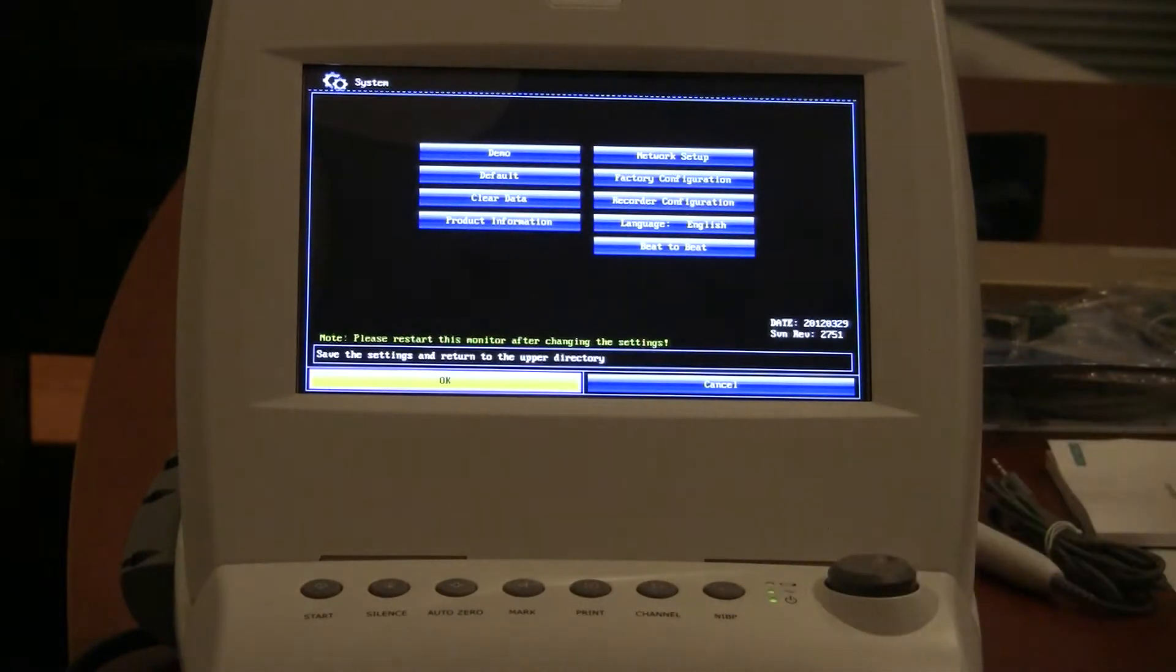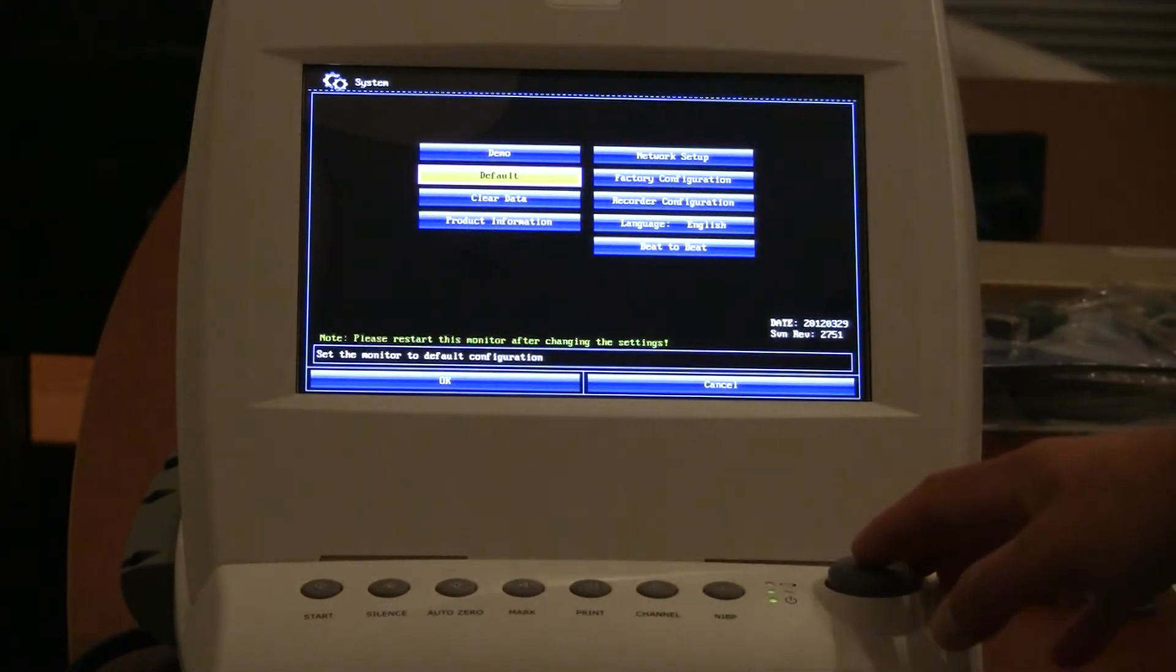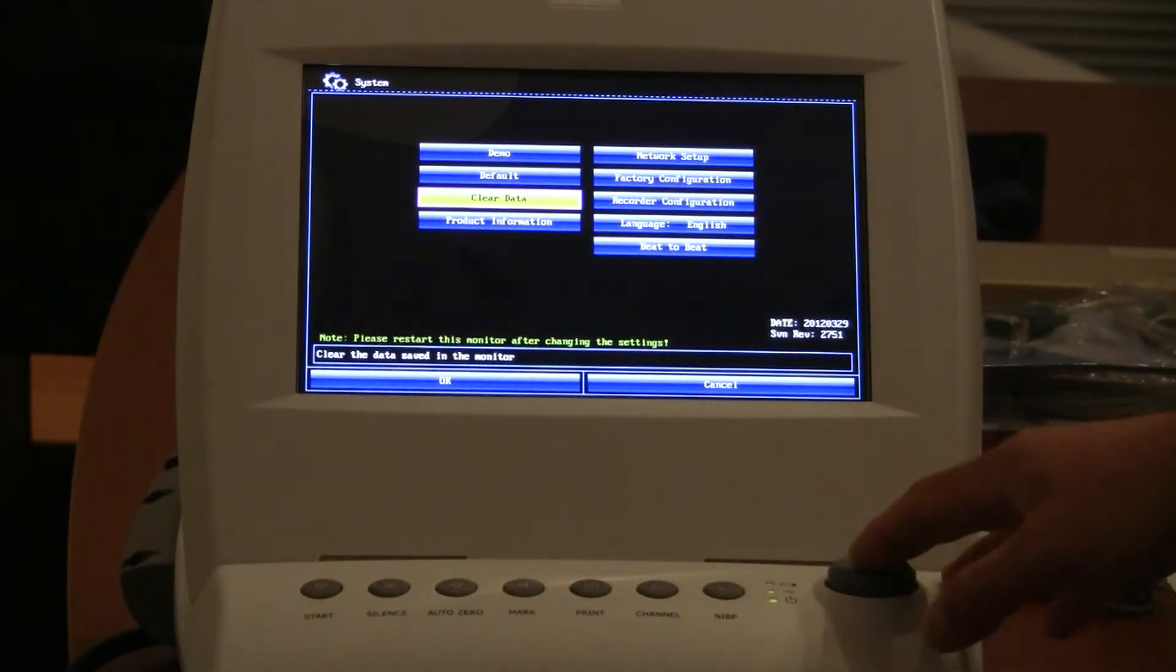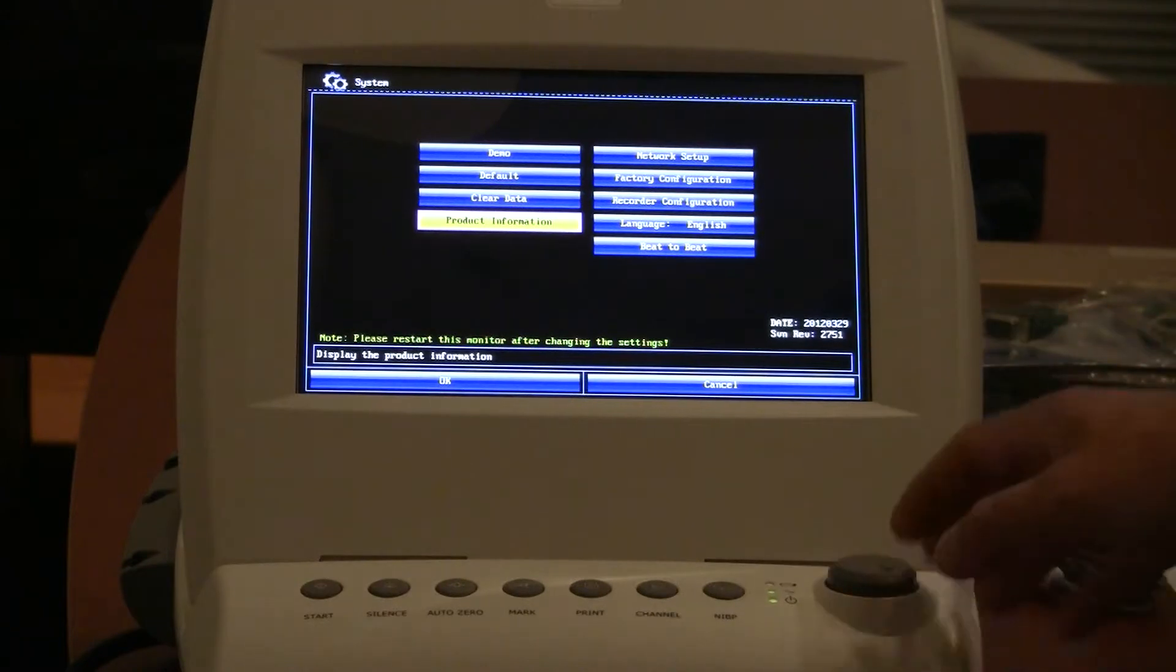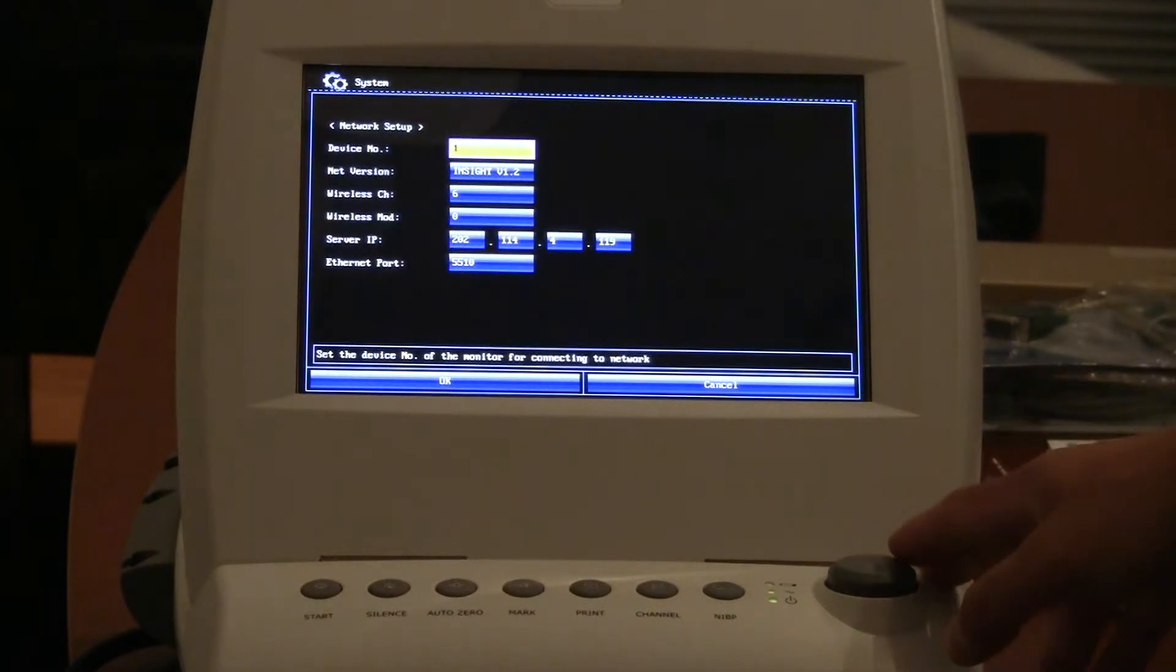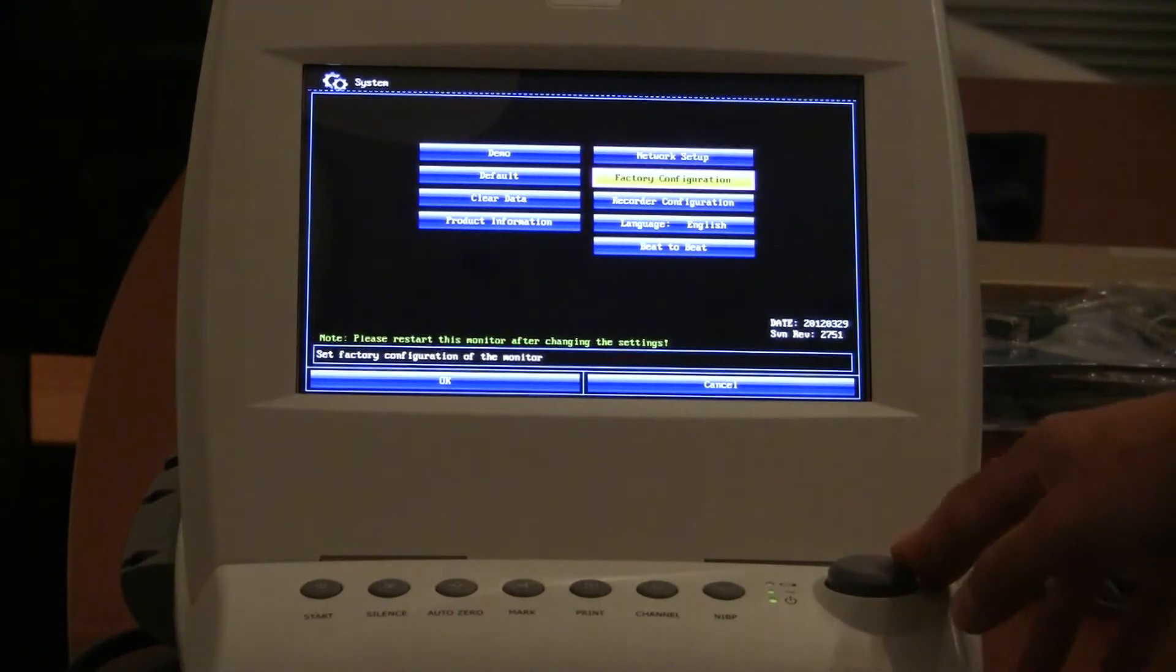You can refer to that. This is where you'll have some of your default settings, factory settings. You can clear your data. Right now we have it in demo mode. Obviously, if we want to restore factory defaults, we could go here, or clear the history of the data, we would select this. Product information is more specific for what version software this particular device is running. Network setup, you'd want to go into this screen when you're configuring it with a central nursing station to say what device it is, to correspond with the proper bed number in the system.